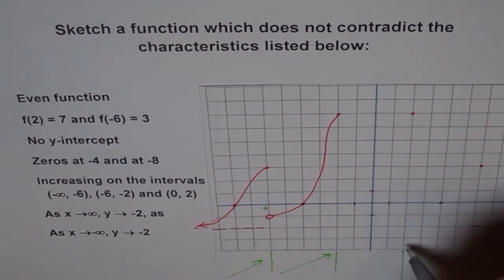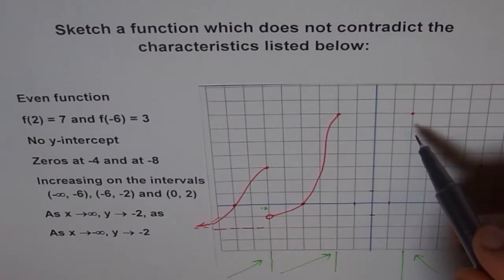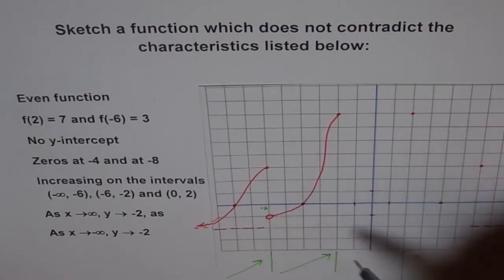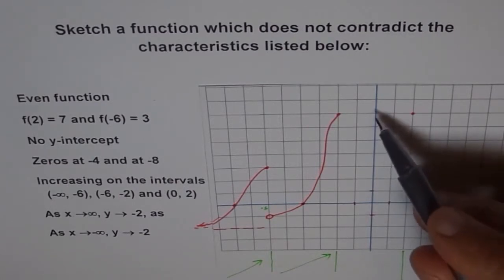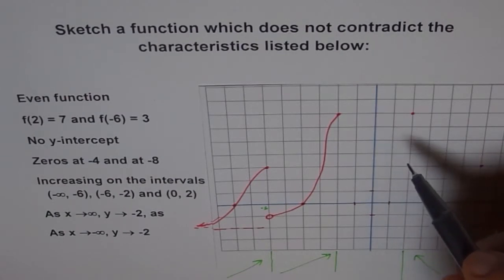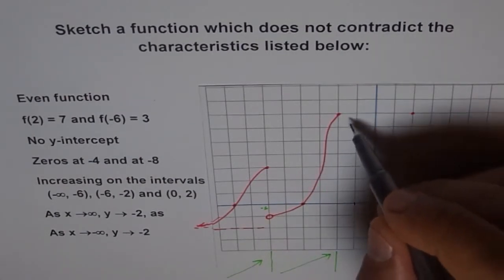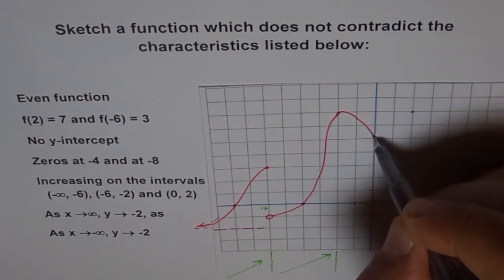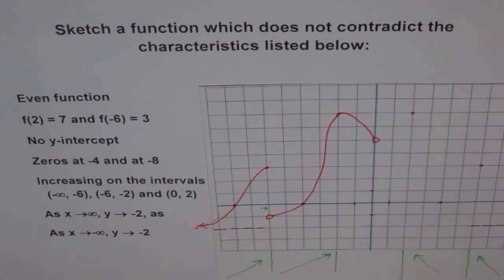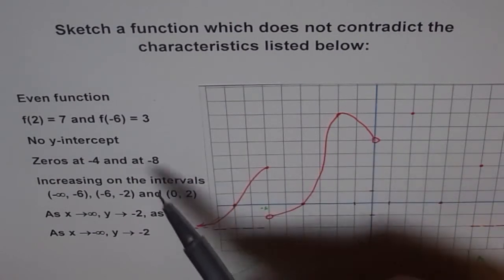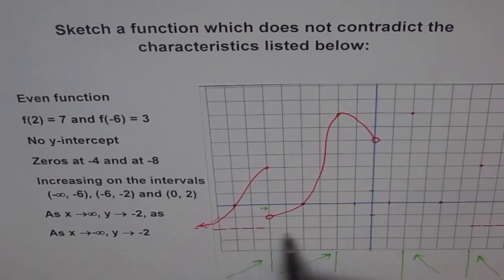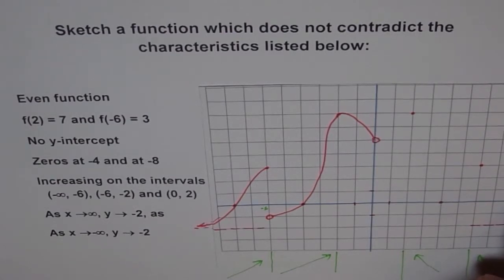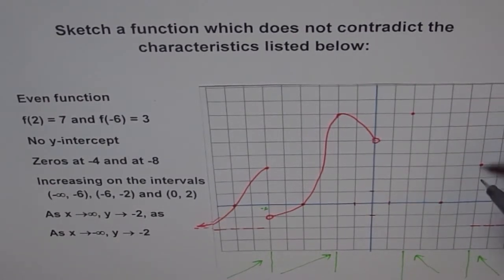For the no y-intercept condition, we can use a hole or a vertical asymptote at x = 0. We can go up and then have a hole at the y-axis, which satisfies the no y-intercept requirement. The function goes up to that point and then we assume a hole there, so no y-intercept is present. This satisfies the left part of the graph, and we can then draw a symmetrical view on the right side.